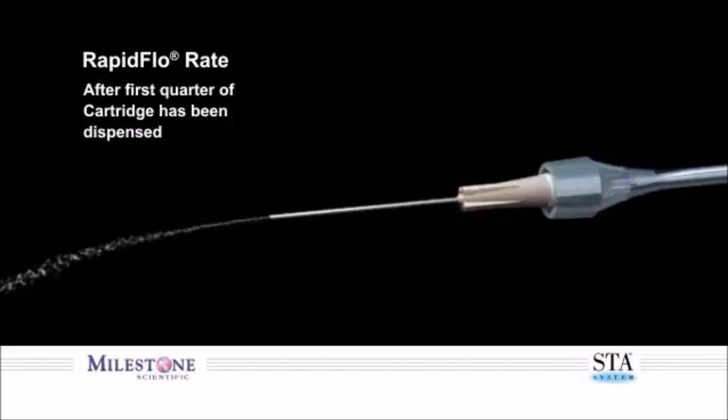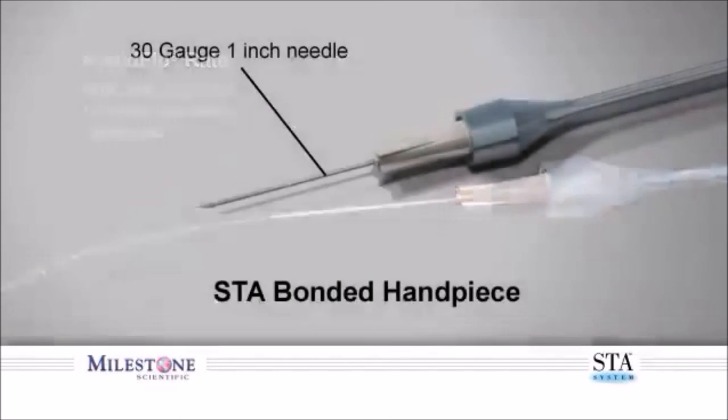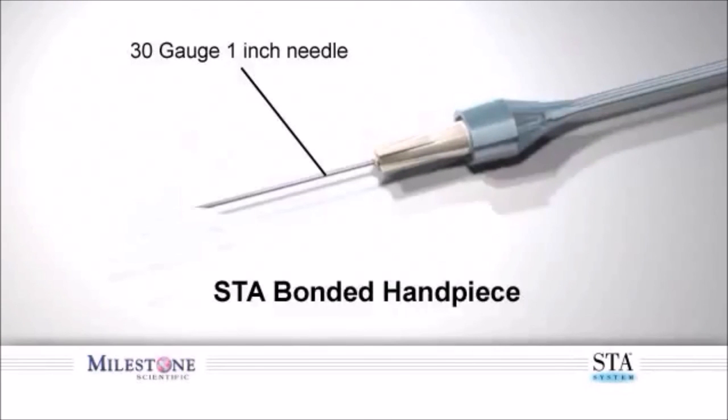To administer a superperiosteal infiltration injection, we recommend the use of a 30-gauge 1-inch needle.